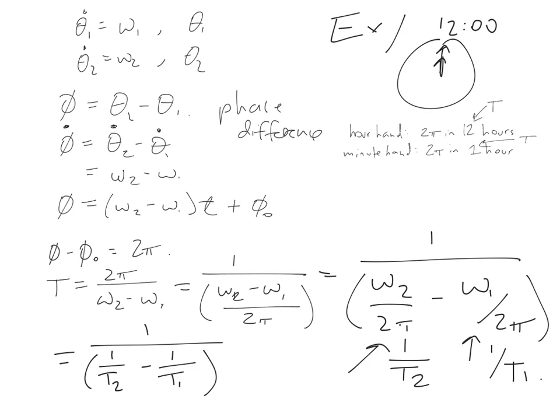That's a quite straightforward number to compute for our example, since T2 is 12 and T1 is 1, or vice versa.